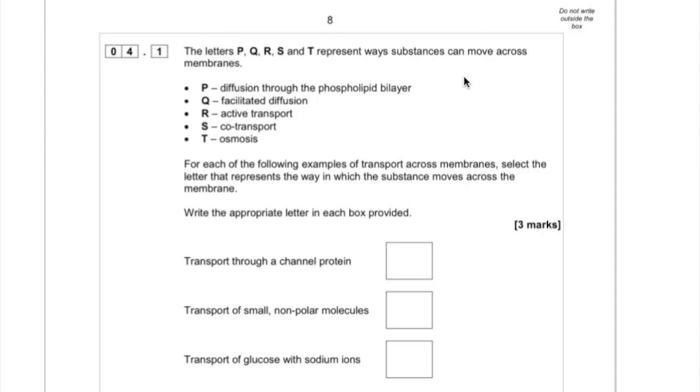Question four. You've been given some ways that substances can move across membranes and you've been given some examples of transport across membranes, and you need to select the letter that represents the way in which the substance moves across that membrane.